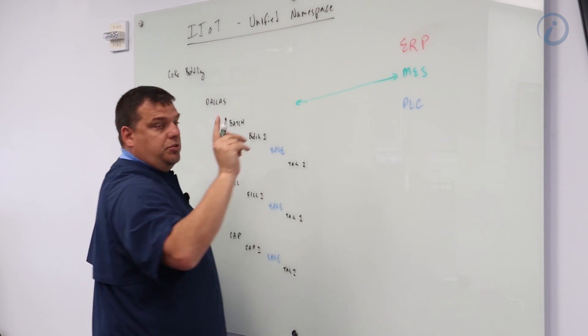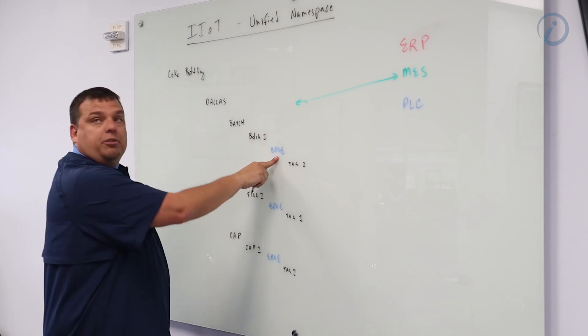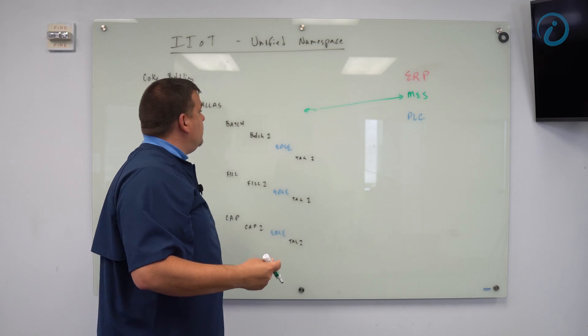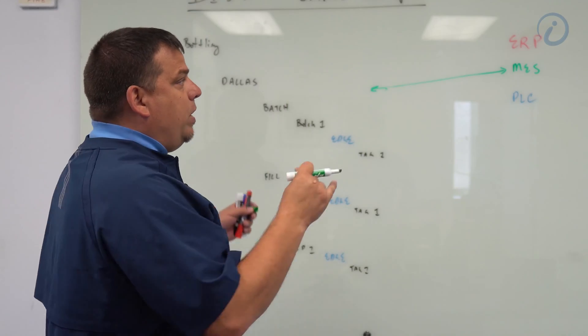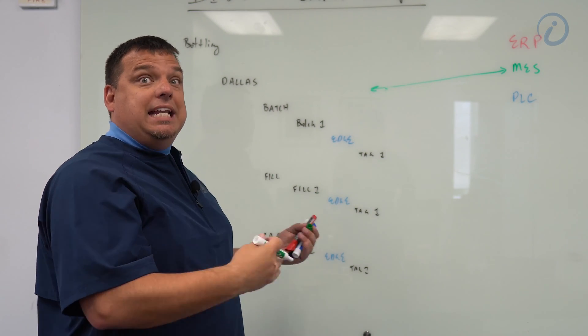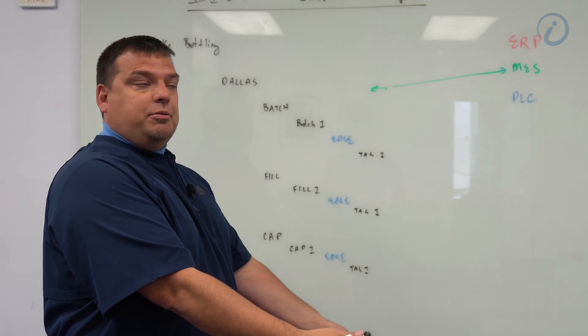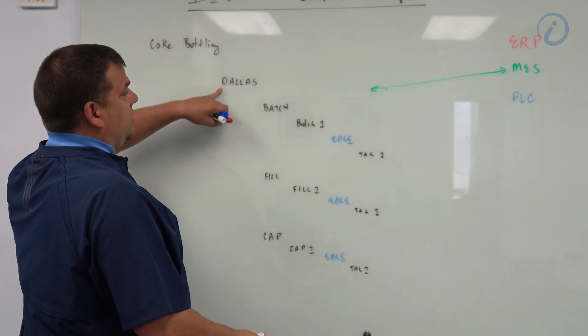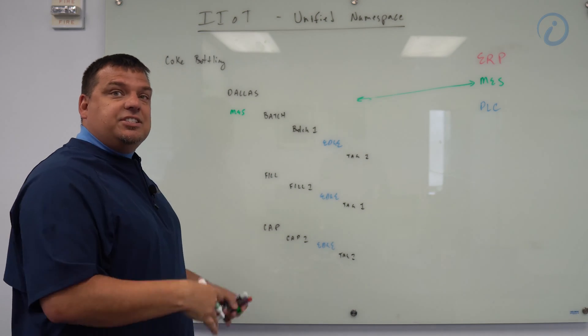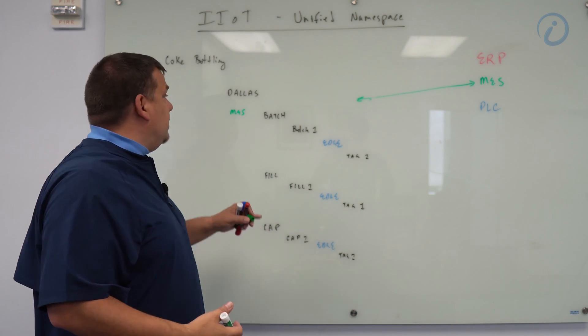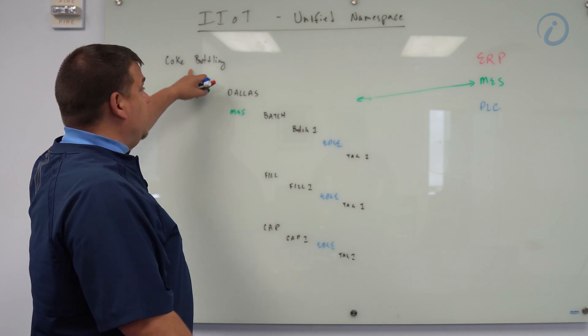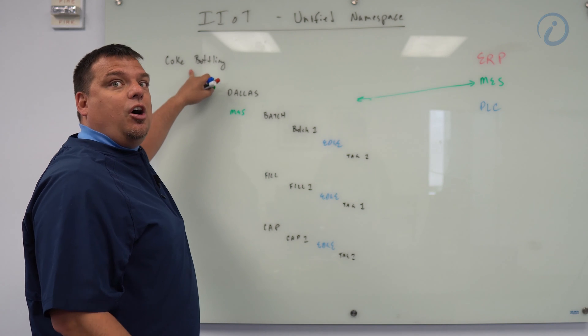So what it's going to do, it's going to do two things. It's going to consume information from the edge directory. And then it's going to publish information back into the namespace. And it's going to publish it in lots of different places. But we are going to give the MES system a location, many locations in the namespace, to put in its information. So under the Dallas location, we're going to have a directory called MES. And inside of the MES directory, we're going to have an OEE tag that the MES system publishes into that gives you total OEE for all of Coke bottling.